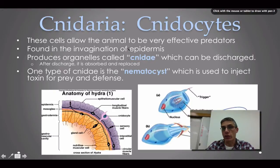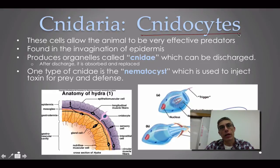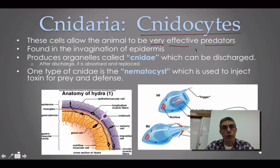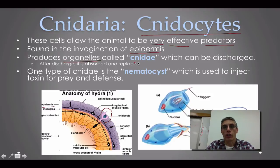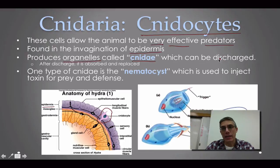The word 'cnidaria' is derived from the Cnidocytes found within this group. Cnidocytes are special stinging cells that allow the animal to be very effective predators — important since these animals don't move very fast, whether polyp or medusa. Cnidocytes are found in the epidermis of the animal, and each cnidocyte contains special organelles called cnidae. Approximately 20 cnidae have been identified so far.